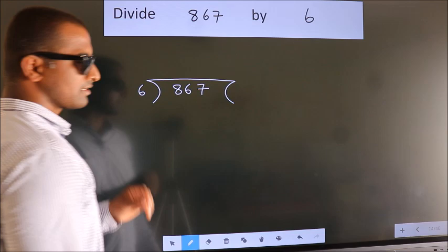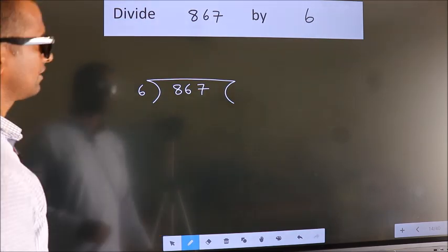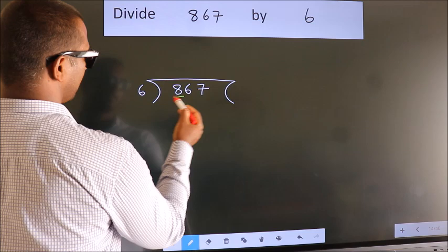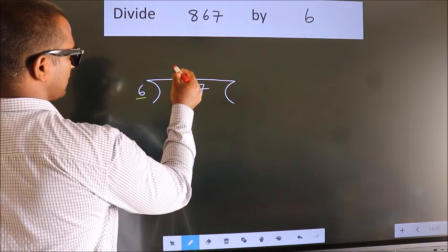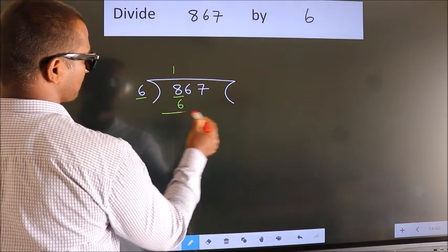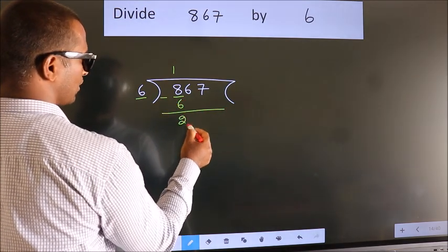This is your step 1. Next, here we have 8, here 6. A number close to 8 in the 6 table is 6 times 1 is 6. Now we should subtract. We get 2.